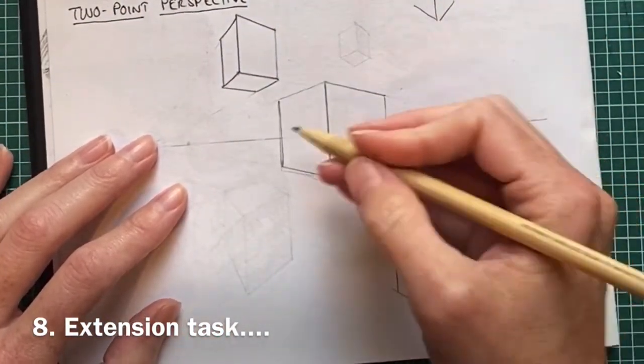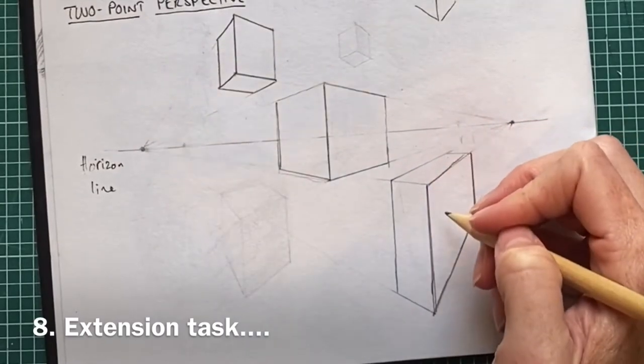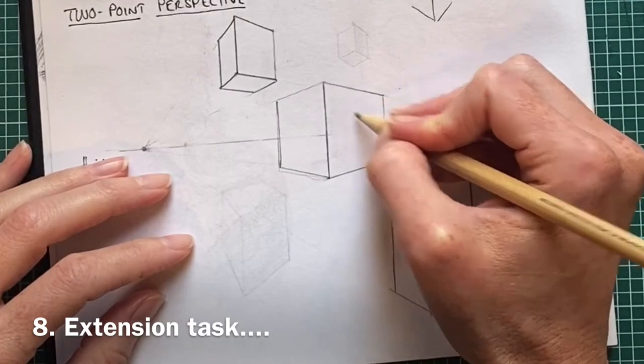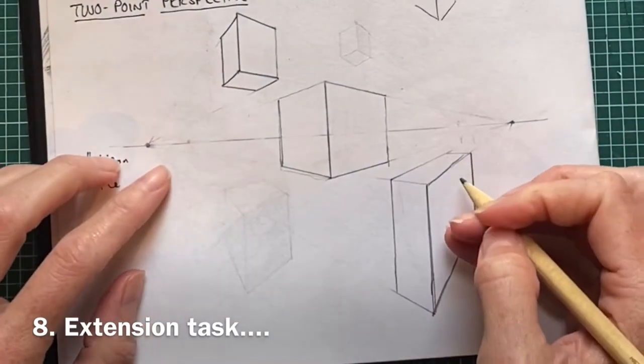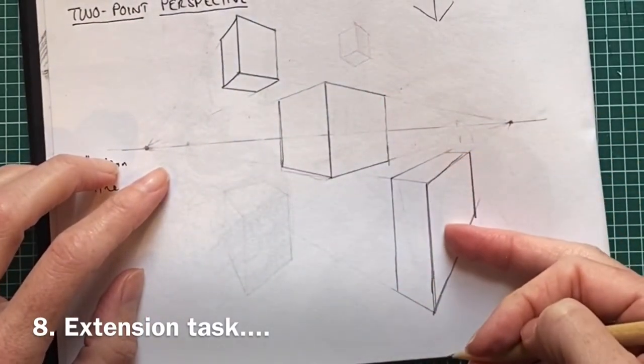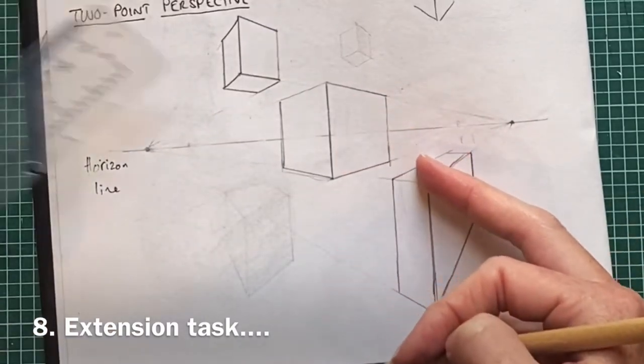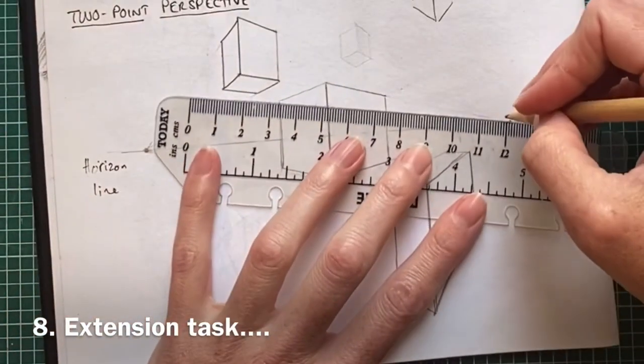There are other things you can do if you want to extend this. If you've grasped this really quickly, you could start practicing with trying to make windows and spaces inside. It's a really similar principle to how we've just done, but I'll show you one window within here. You would use just more of those converging lines from vanishing points.